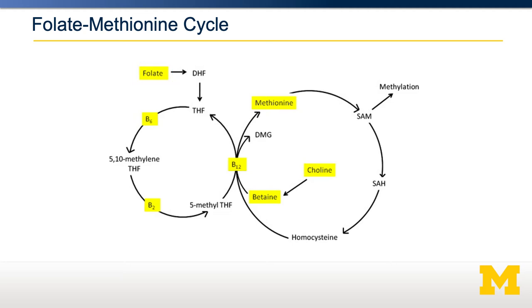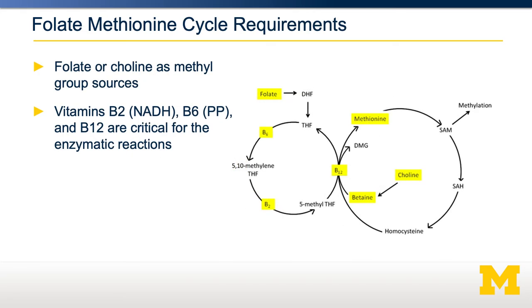So you can generate methyl groups by dietary provision of both choline and folate. In addition, several vitamins are critical for the function of this cycle. Vitamin B6 and vitamin B2 are both important for folate conversion into 5-methyl-THF. Vitamin B12 is critical for the enzyme that converts betaine or 5-methyl-THF into methionine. If there's a limitation in any of those factors, there'll be a limiting amount of SAM and methylation may not proceed effectively.